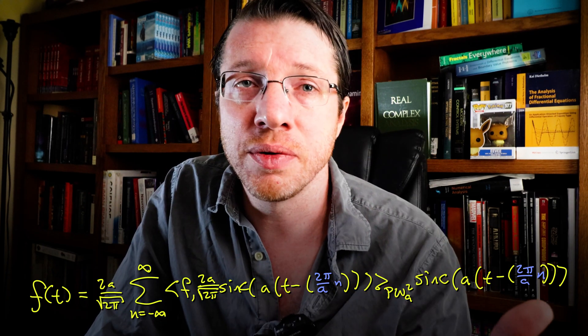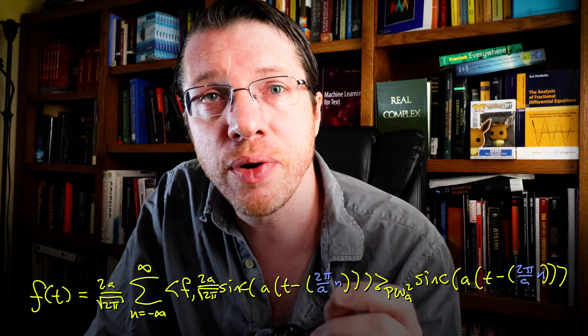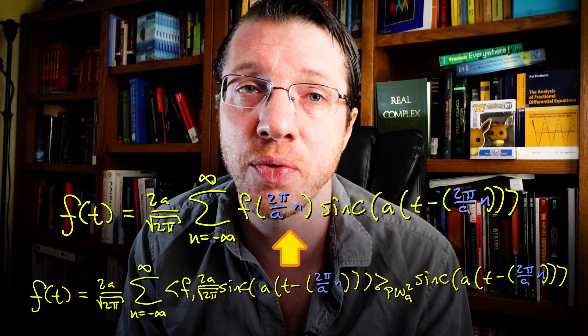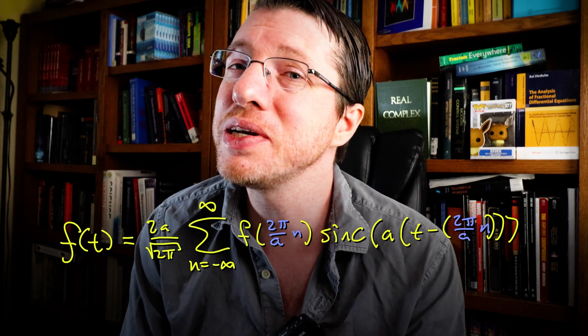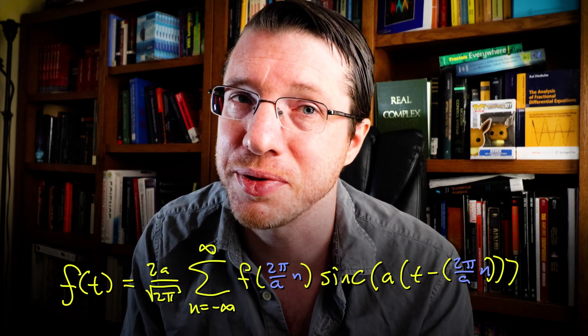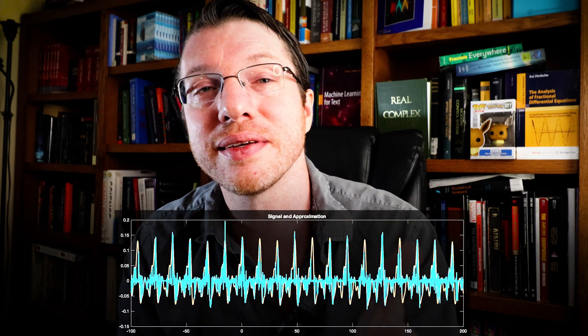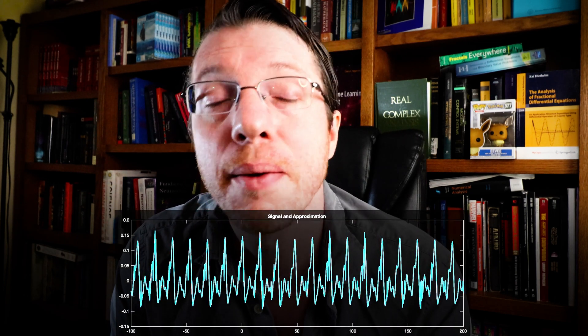This works for any orthonormal basis, but in this case, the inner products are just the values of f evaluated at these center points. And so, we just reconstructed f from its samples, and the frequency of these samples depends on the bandwidth of the original signal. Piece of cake.